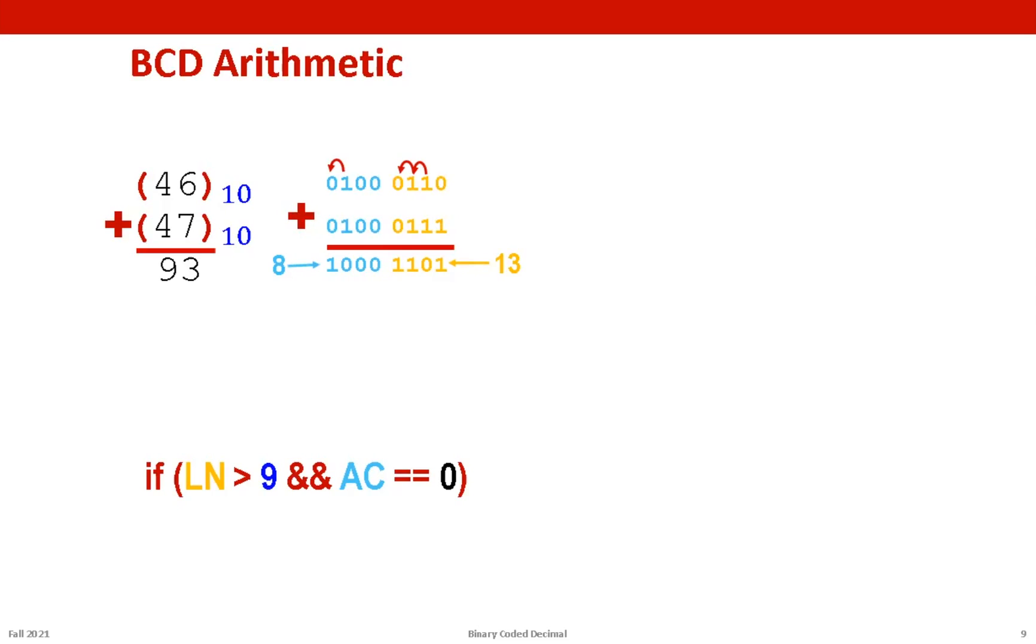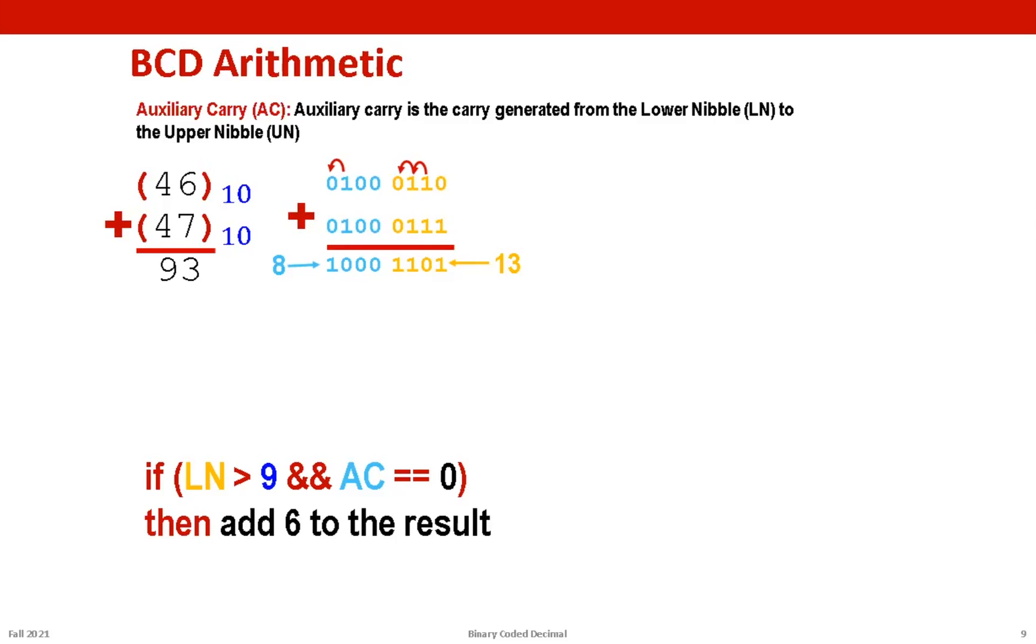The golden rule in BCD arithmetic is that if the lower nibble is greater than nine and auxiliary carry is equal to zero, then we add six to the result. Now what is auxiliary carry? Auxiliary carry is the carry generated from the lower nibble to the upper nibble. In our case there is no auxiliary carry, but since the result is greater than nine we have to add six to obtain the correct result. And here we go when we add, this is the correct result that is exactly what we expected: 93.